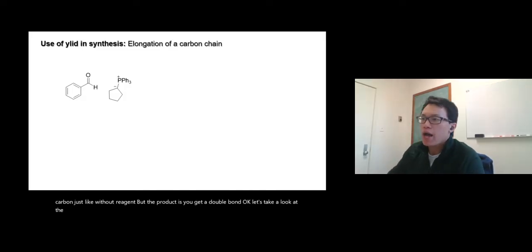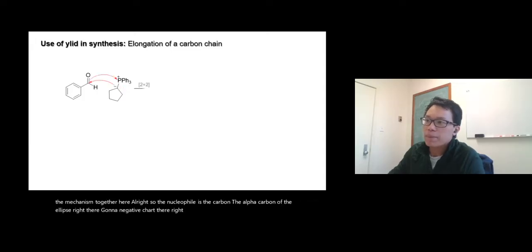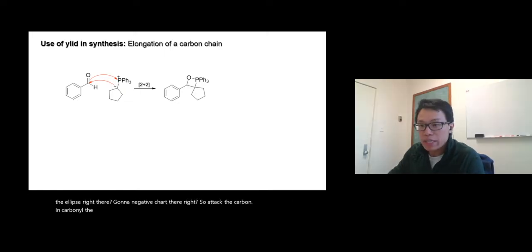The nucleophile is the carbon, the alpha carbon of the ylide, right there with a negative charge. It attacks the carbon of the carbonyl. The oxygen on the carbonyl will take the two pi electrons of the carbonyl and attack the phosphorus.